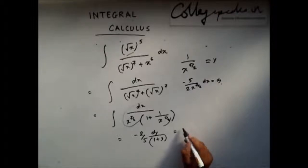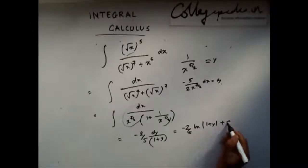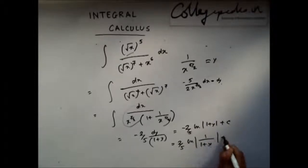This turns out as minus 2 by 5 ln of 1 plus y plus c, or I can write it as 2 by 5 ln of 1 by 1 plus y plus c.